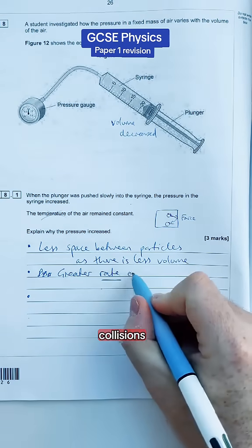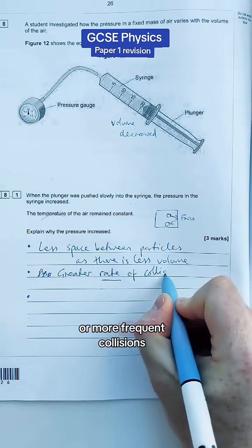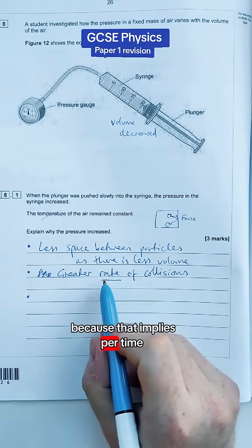Now, you can't just say more collisions, say a greater rate of collisions or more frequent collisions, because that implies per time, so it's per second.